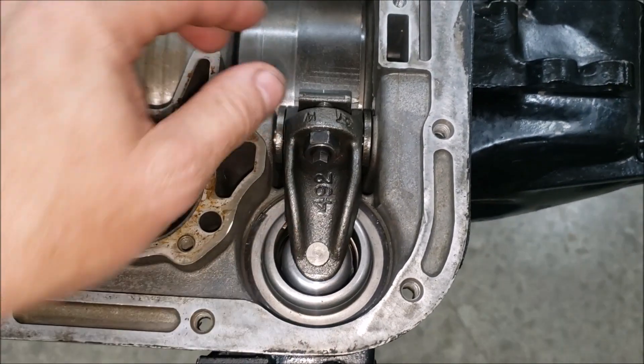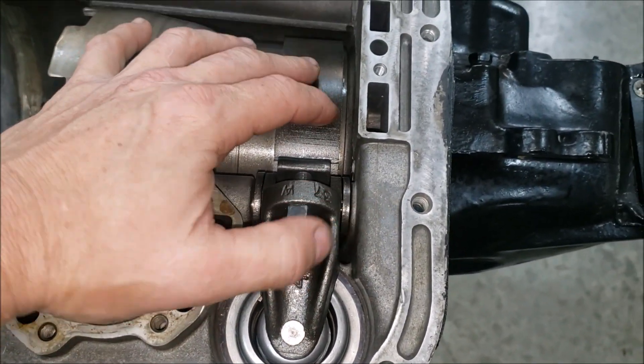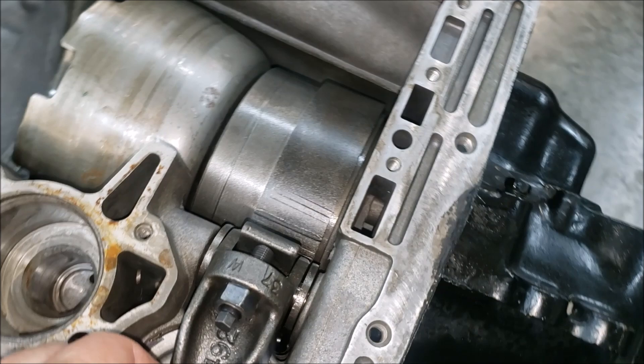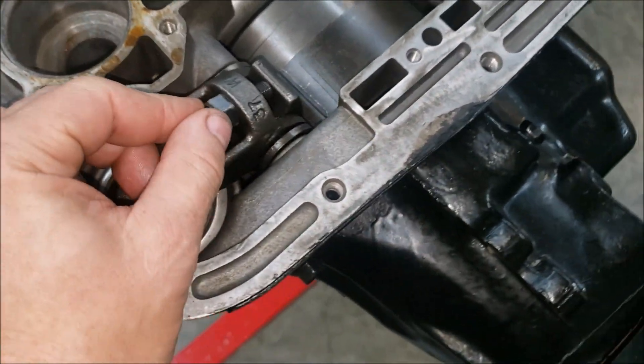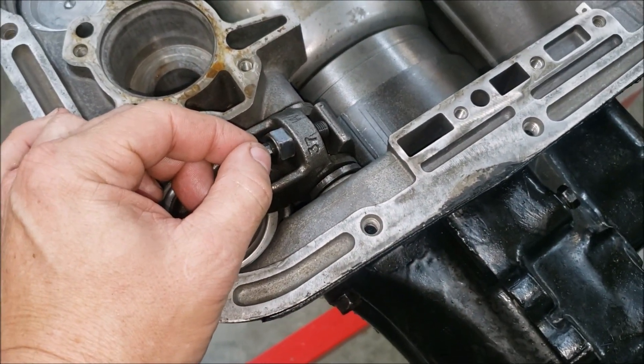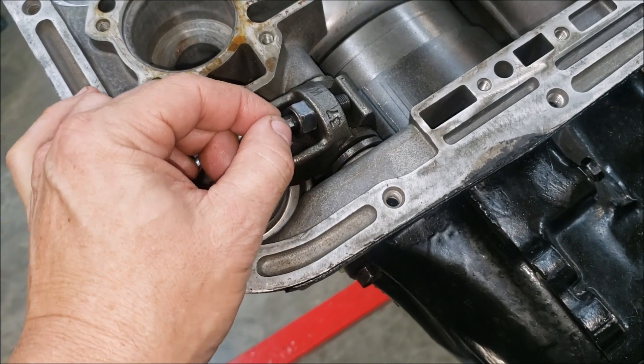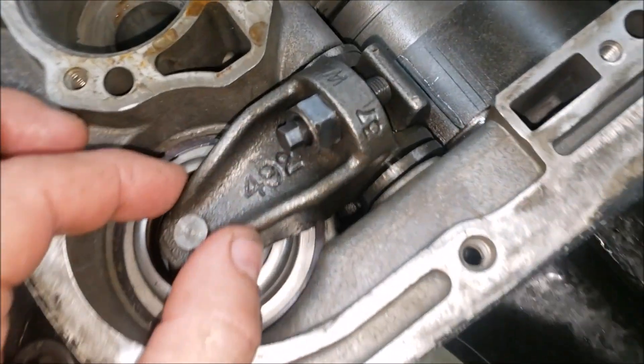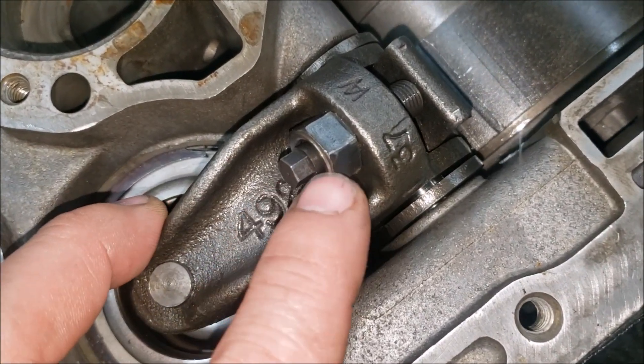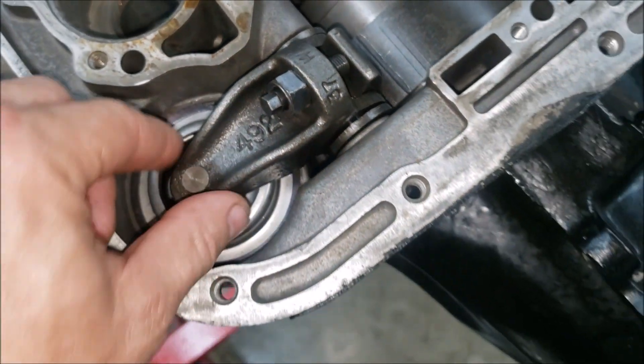So this is what he's talking about on the rear band. This is gonna have low band apply, so you got to have some movement in it. I basically snugged this up to about 75 inch pounds and then backed it off two and a half turns and then locked it off and put on the nut.